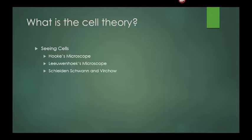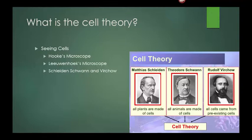Schladen, Schwann, and Virchow. In 1838, using his own research and the research of others, Matthias Schladen concluded that all plants are made of cells. A year later, Theodore Schwann reached the same conclusion about animals. In 1855, Rudolf Virchow proposed that new cells are formed only from cells that are already existing. All cells come from other cells, wrote Virchow.